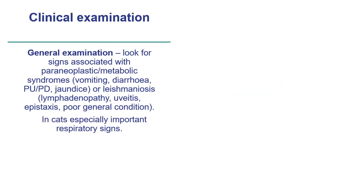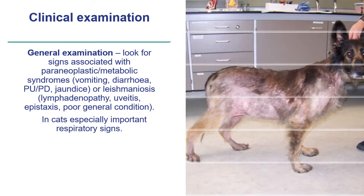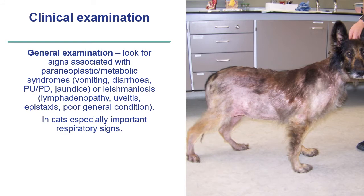The general clinical examination is the first step enabling us to narrow down the differential diagnosis. In the presence of signs such as vomiting, diarrhoea, PU/PD, or jaundice, we should consider metabolic syndromes or paraneoplastic diseases. Less common signs such as uveitis, lymphadenopathy, epistaxis, and poor general condition, especially in animals with a history of travelling, might point towards leishmaniosis. In cats, the presence of respiratory signs may suggest a viral dermatosis.